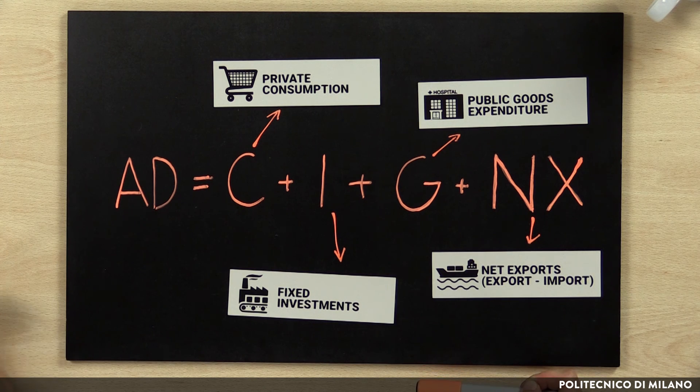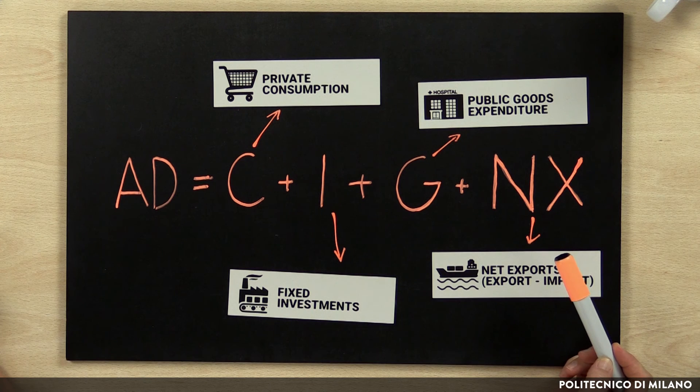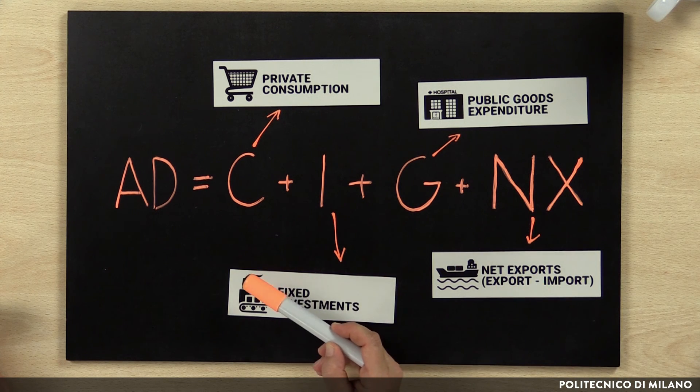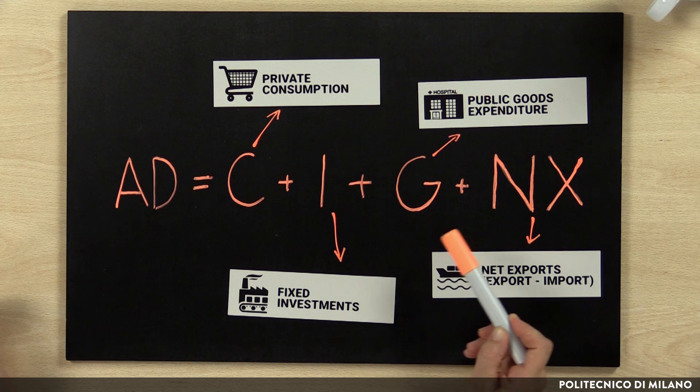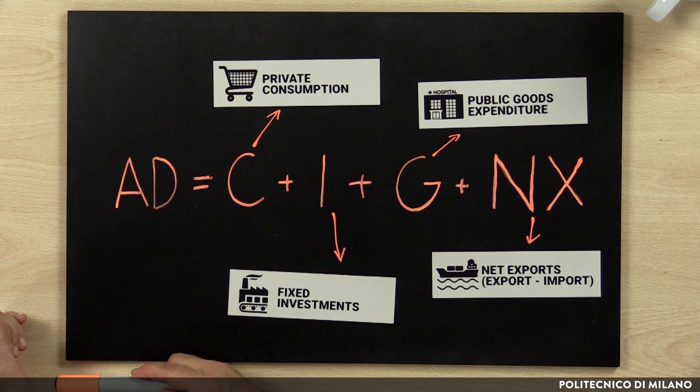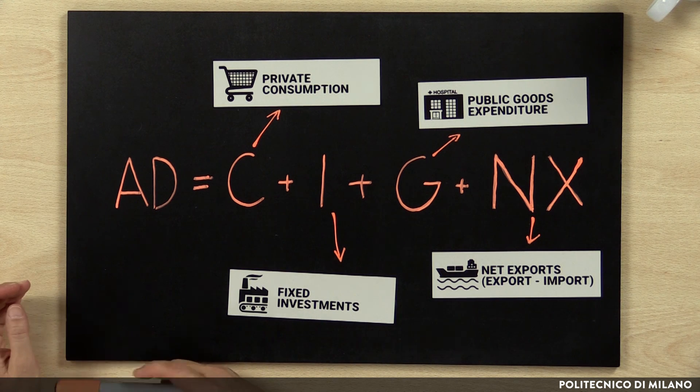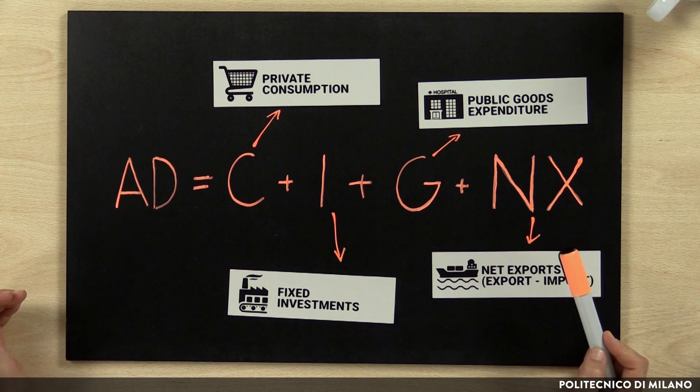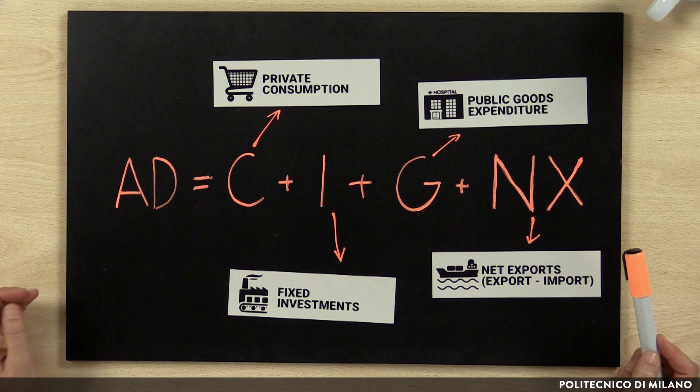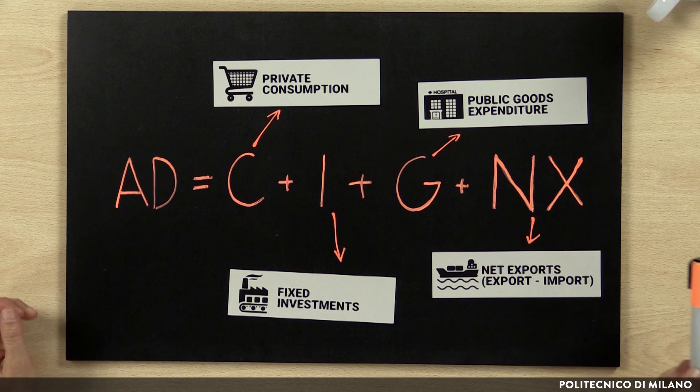Changes in one of these components will shift the aggregate demand curve to the right if there is an increase in consumption, investment, public expenditure or net exports, and to the left in case there is a reduction of one of these components. Therefore, shifts in the aggregate demand curve are determined by changes in the variables affecting all these components. In this respect, economic policies might have an important role by shifting one of these components of aggregate demand.